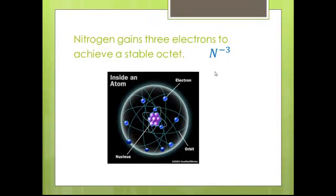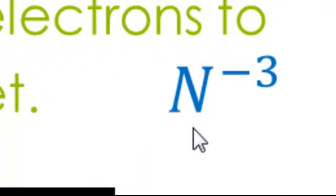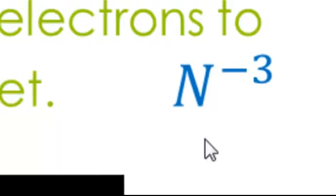What ion does it form? Well, by gaining three negative electrons, it's now not a nitrogen atom, but a nitrogen ion with a negative three charge.